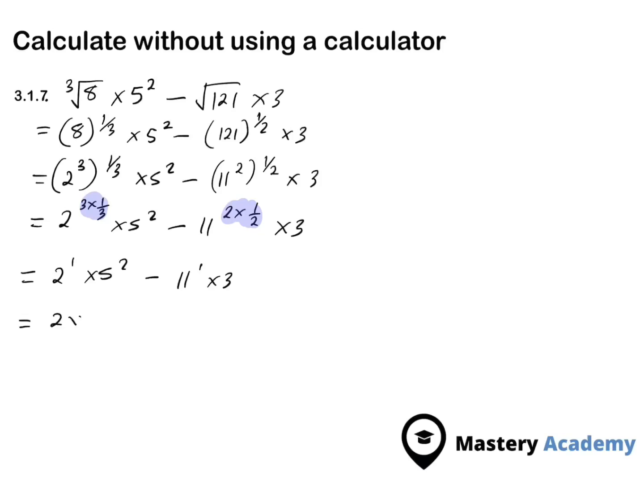Therefore, this is the same as 2 times 5 to the power of 2, which is 25, minus 11 times 3, which is 33. This becomes 50 because 2 times 25 is 50 minus 33, which is equal to 17.